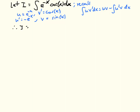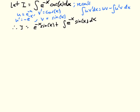So the derivative of u is minus e to the minus x, and v is sine of x — since the derivative of sine is cosine. Applying the integration by parts formula, I equals e to the minus x times sine of x, plus the integral of e to the minus x times sine of x. This hasn't solved the integral for us, but if we use integration by parts again and keep going, we might get back to the initial integral and solve an algebraic equation for I.